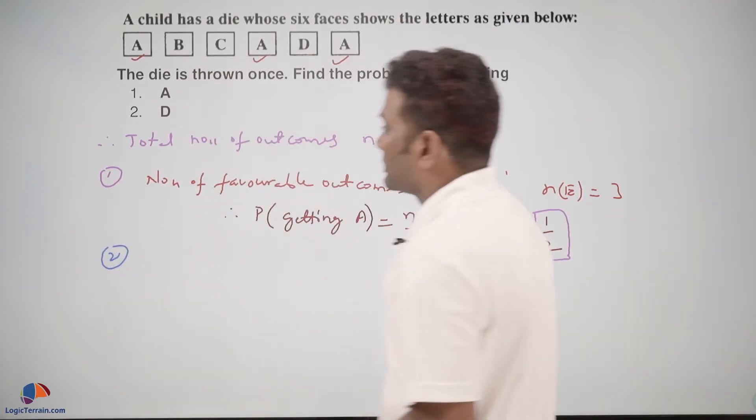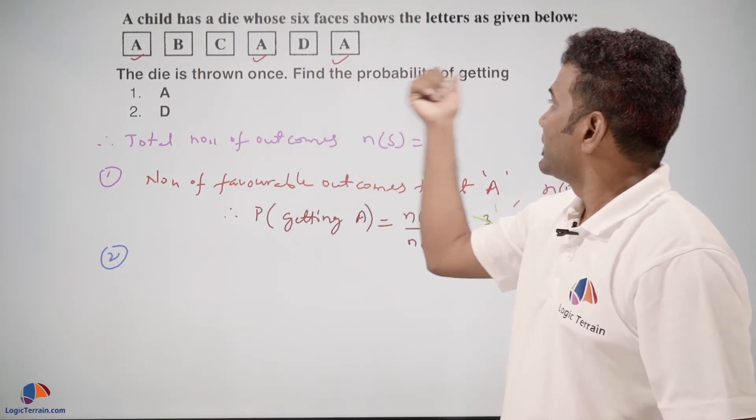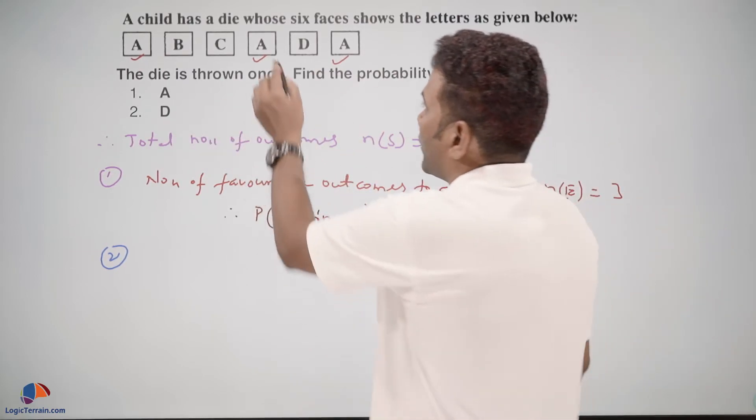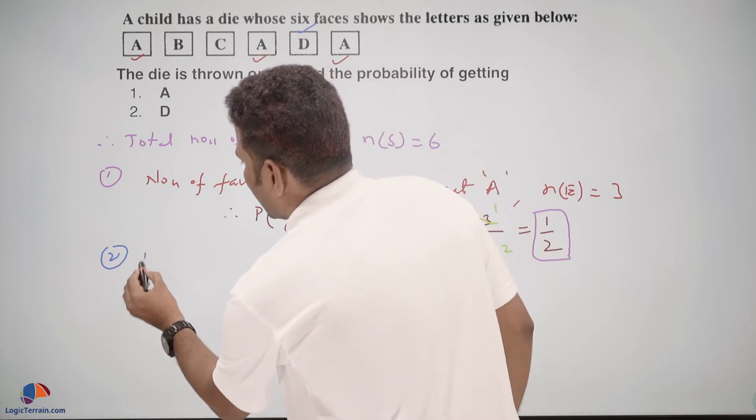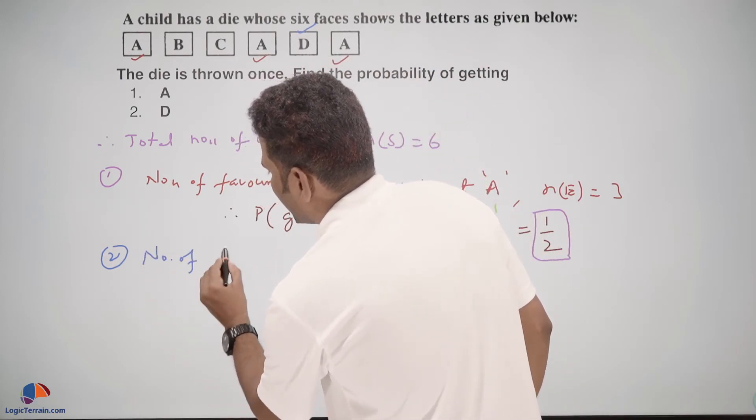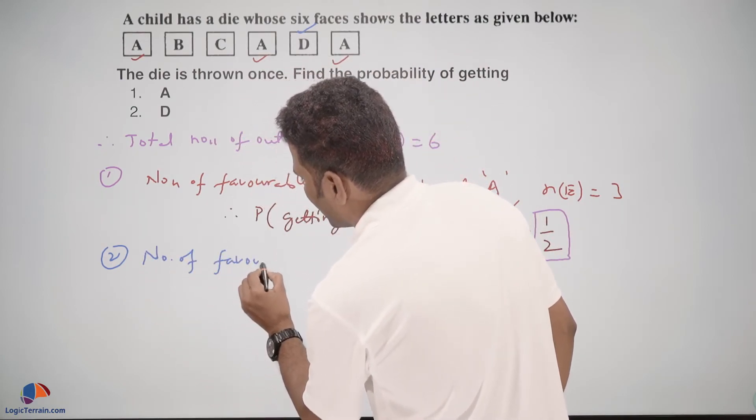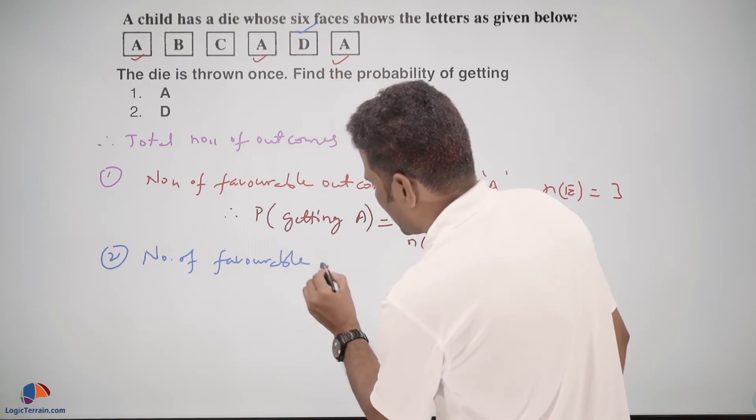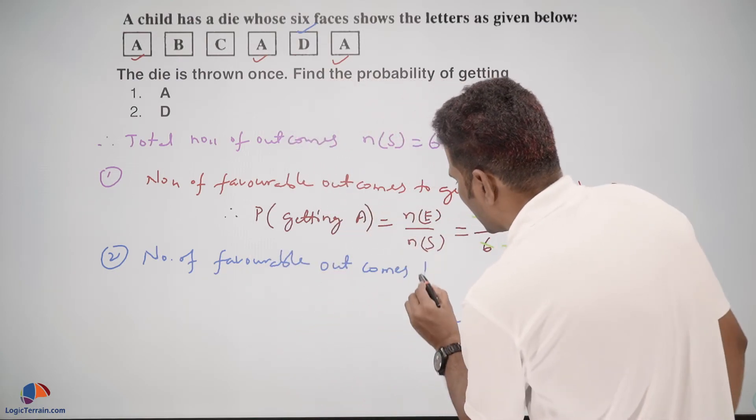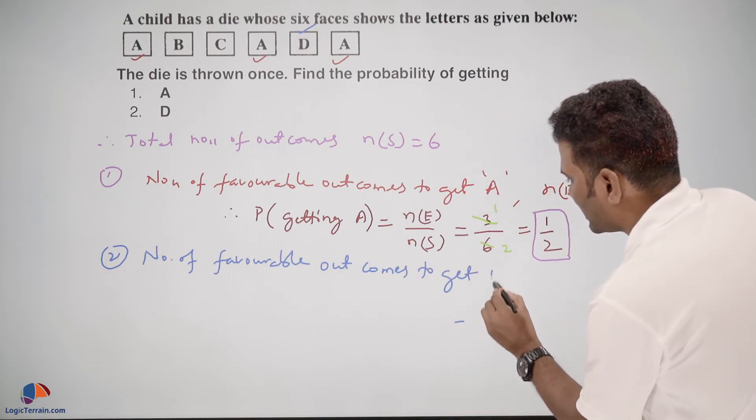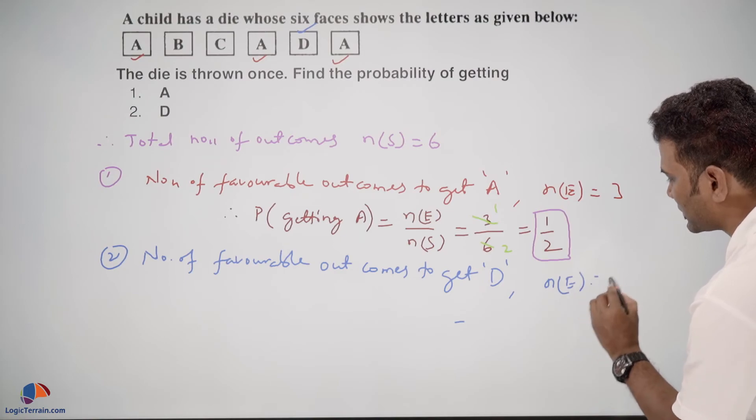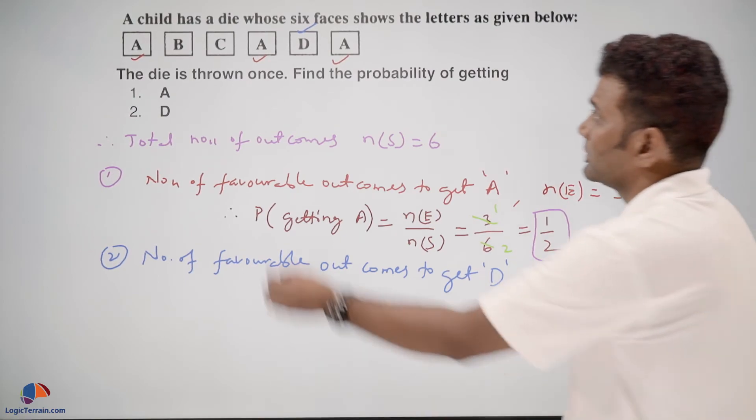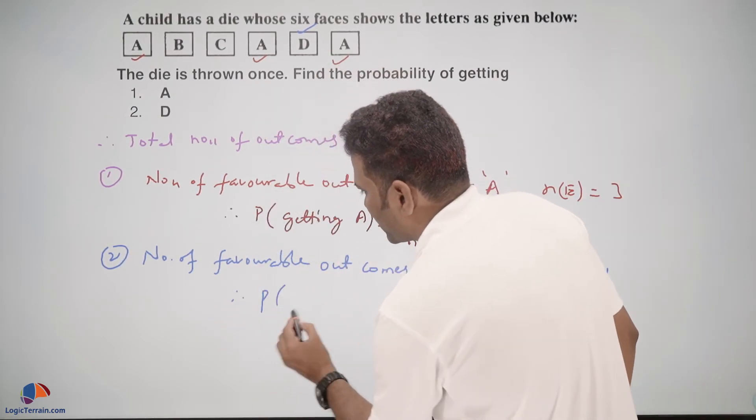Second case: probability of getting D. How many D's are there? We have one D. So number of favorable outcomes to get D, that is n(E), equals 1. Therefore, probability of getting D...